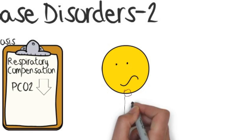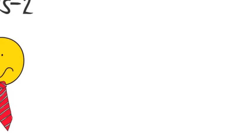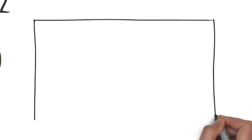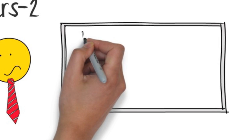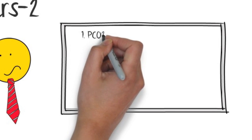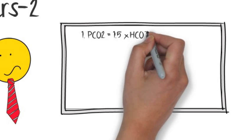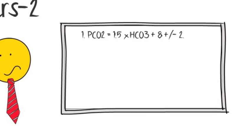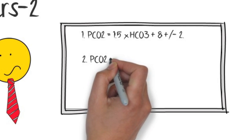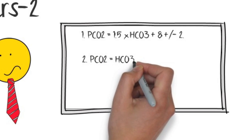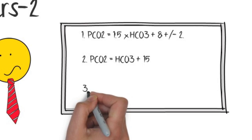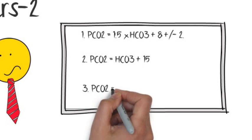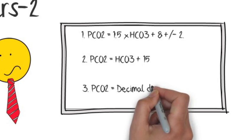The question is how much pCO2 will go down. There are three formulas for it. Number one is the Winters equation: pCO2 = 1.5 × bicarb + 8 ± 2. The second equation is bicarb + 15.